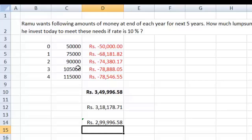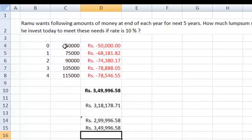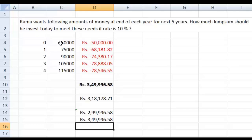Your answers have still not matched, and the reason for that is that we will need to add the initial 50,000 also, which is required right now. So, we have ignored that. Now, 2,99,996 plus the initial 50,000 makes it 3,49,996.58. So, now as you can see, it is again matching.